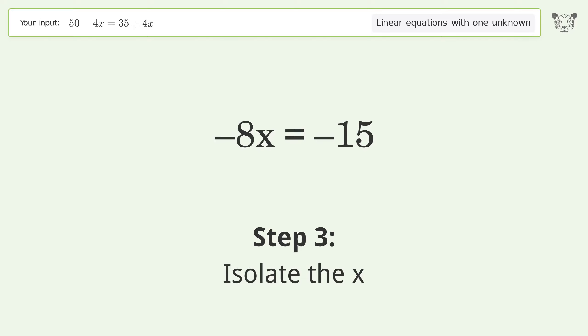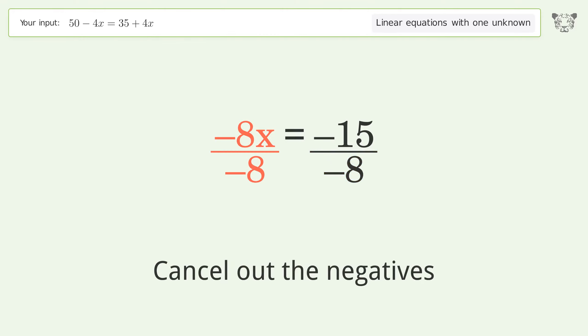Isolate the x. Divide both sides by negative 8. Cancel out the negatives and simplify the fraction.